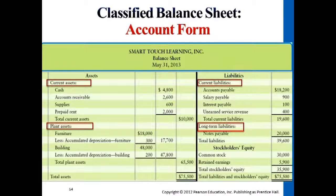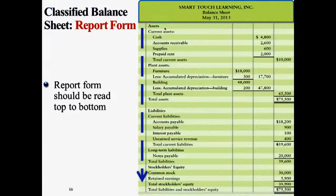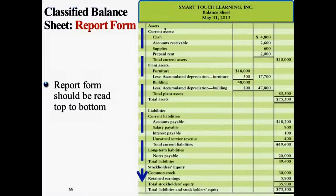This layout of the balance sheet is not the only one used in the business world. This is called the account form, which is mostly used in introductory financial accounting textbooks because it mirrors the accounting equation — left is assets, right is liabilities and equity. There's also another format called the report form, which presents the same information from top to bottom. It still starts with assets, classifies them into current and long-term, then lists liabilities — current and long-term — and equity. All the information is the same; it's just either left to right or top to bottom.